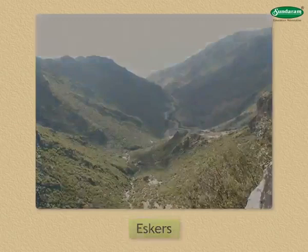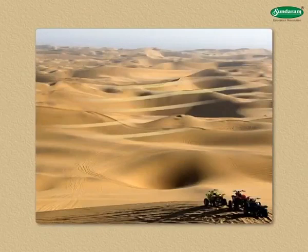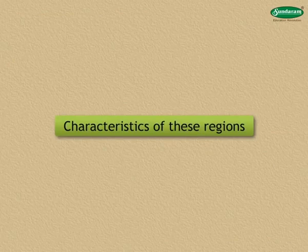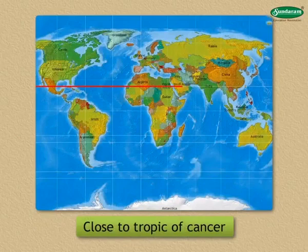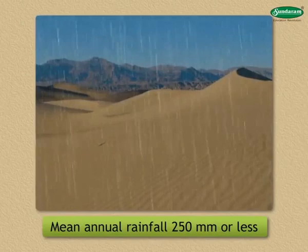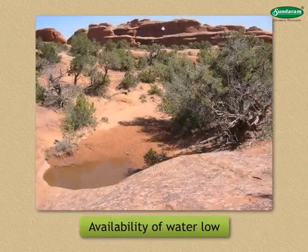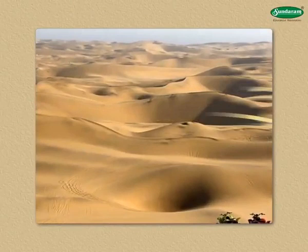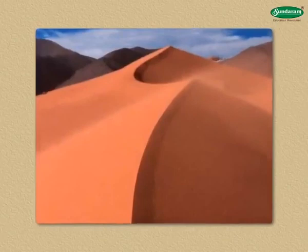Now let us see the work of wind. The work of wind is predominantly found in hot deserts and semi-arid regions. Hot deserts are generally found close to the Tropic of Cancer and Tropic of Capricorn. The mean annual rainfall in hot deserts is 250 mm or less. As evaporation is higher than rainfall, the availability of water is low. Due to low rainfall, the vegetal cover is negligible. Lack of obstacles makes the work of wind effective. Wind also performs the work of erosion, transportation and deposition.